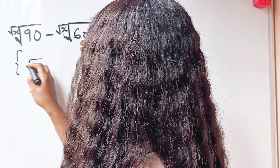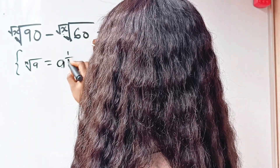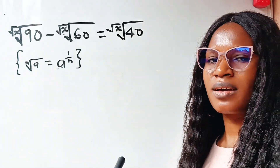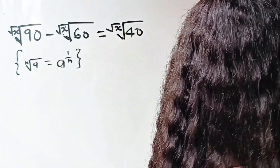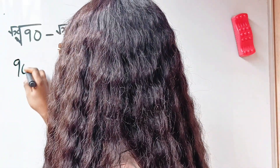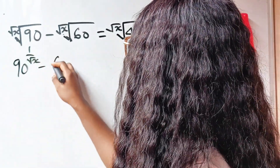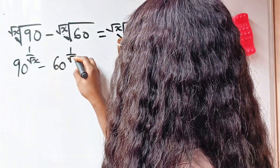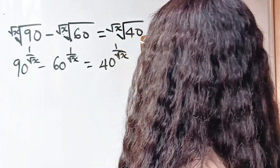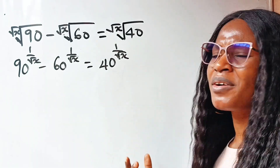Remember that the nth root of a is equal to a raised to the power of 1 over n. Applying this, we have 90 raised to the power of 1 over root x, minus 60 raised to the power of 1 over root x, is equal to 40 raised to the power of 1 over root x. Now it's looking better.